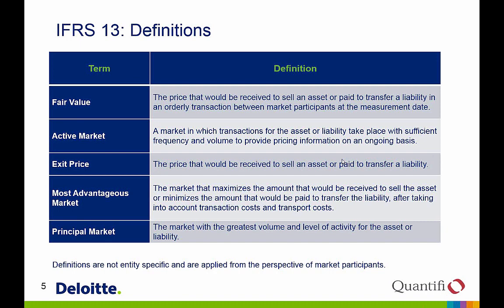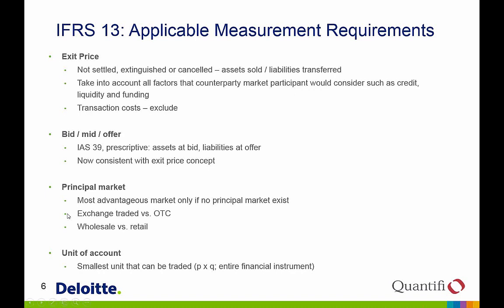IFRS 13 introduces the concept of a principal market, defined as the market with the greatest volume and level of activity for the asset. IFRS 13 wants you to use the principal market for financial instruments. Only if a principal market does not exist should one move to the most advantageous market, defined as the market that maximizes the amount received when selling the asset, taking into account transaction and transport costs.